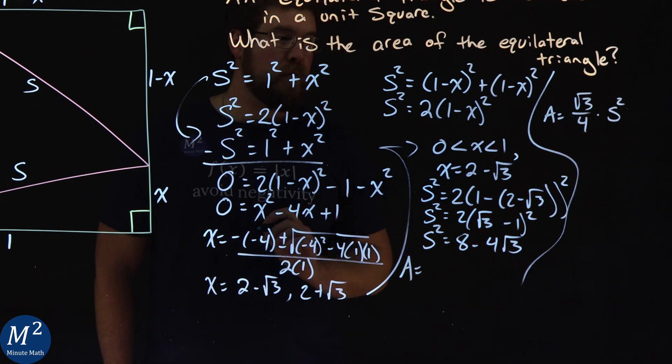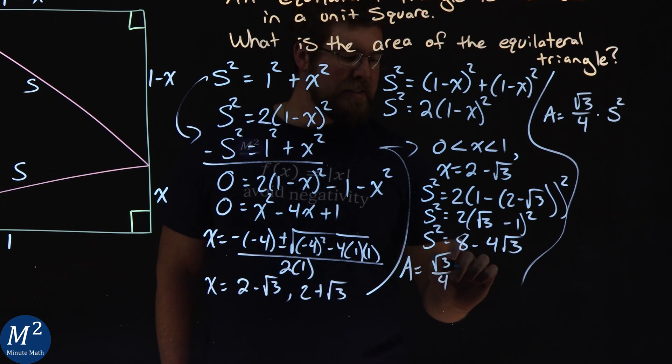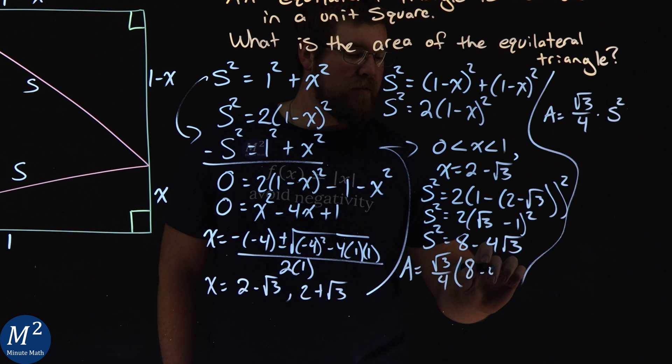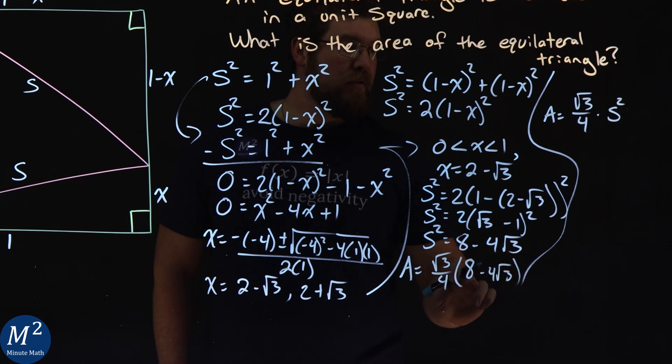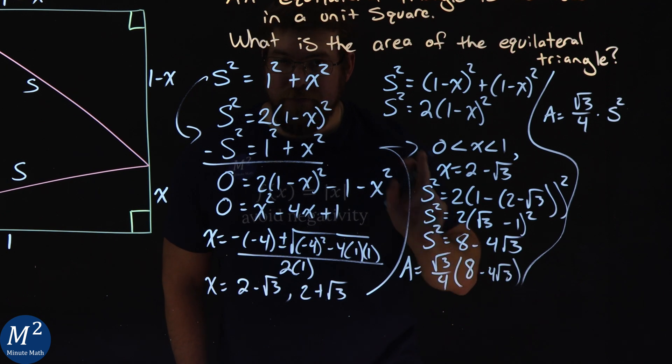Now we're already given that side length squared there. So we can say the area of this equilateral triangle is square root of 3 over 4 times our side length squared, 8 minus 4 square root of 3. And notice that it was side length squared. We already had this in terms of it being squared. We kept it that way.